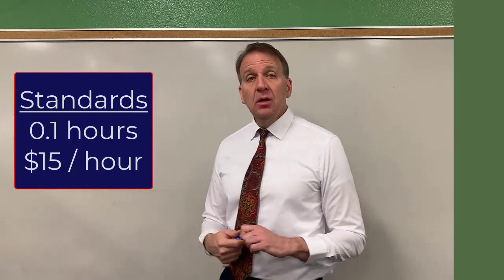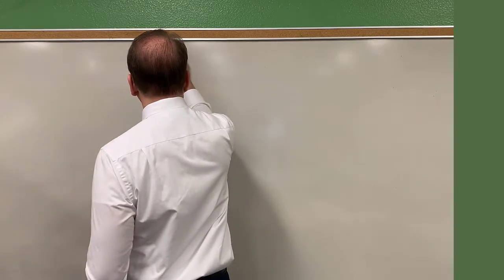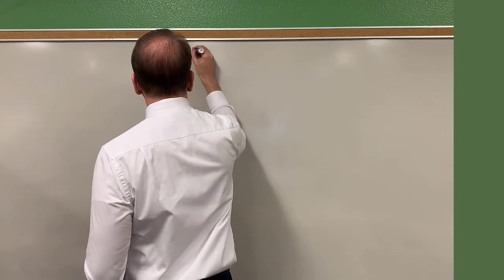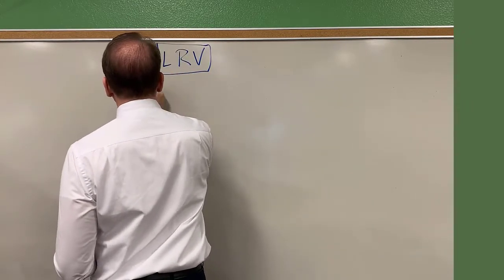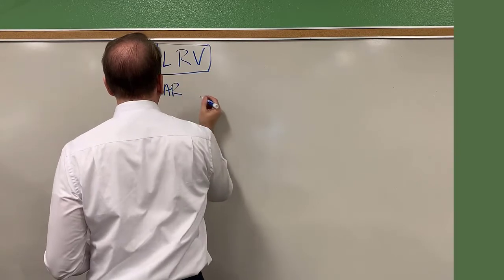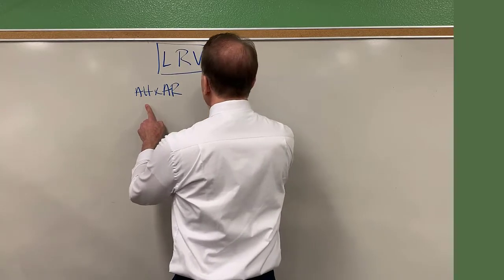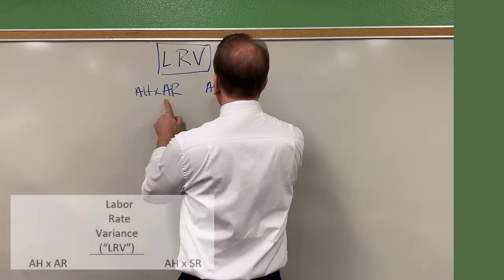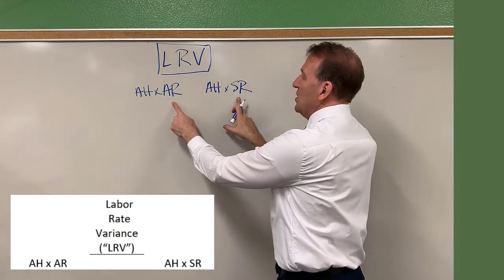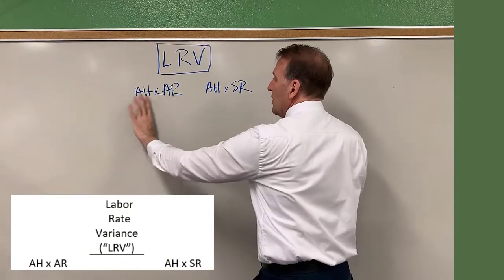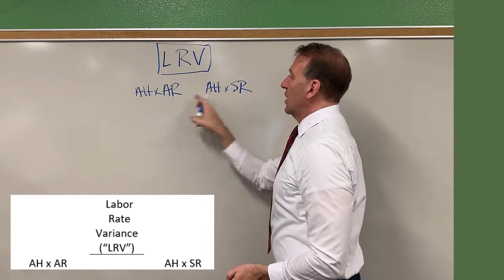Now let's look at what actually happened so we can calculate these variances. First, we're going to do the labor rate variance — LRV. We're going to take actual hours times the actual rate and compare that. Since it's the rate variance, hours stay the same; the rate is what changes. So we have pure actual on one side, and then we change the rate to calculate the variance associated with the rate.